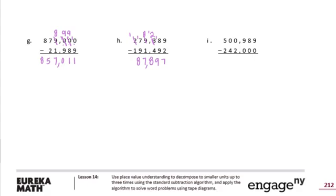500,989 minus 242,000. 9 minus 0 is 9. 8 minus 0 is 8. 9 minus 0 is 9. Now 0 minus 2 — can't do, and can't borrow from the 0, so I go all the way over. That becomes a 4. That becomes 10, but we still need to borrow from it, so 10 minus 2 is 8. 9 minus 4 is 5. And 4 minus 2 is 2. Answer: 258,989.